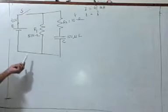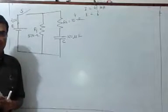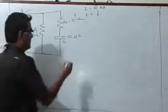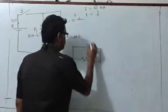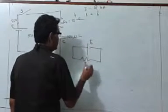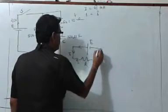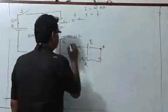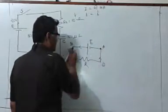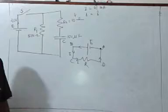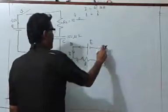Before we proceed with the problem, it is necessary to understand Kirchhoff's Loop Law. Suppose you have a battery E and a resistor R connected, with current flowing through it. We are supposed to traverse a loop in one particular direction — either anti-clockwise or clockwise, it makes no difference. Let me start from A and go to B, then C, then D, and back to A.